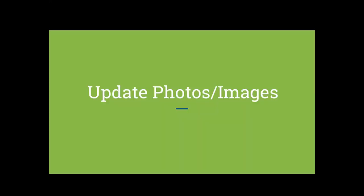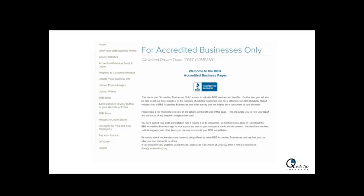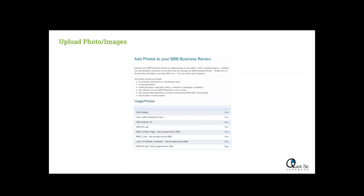We're going to start today by talking about uploading photos and images. To do that you'll start by going to the main page of the business login. You will know you're at the correct place because it will say the name of your business, and for accredited businesses only, once you're at this page you can select Upload Photos and Videos. When you click on that button you'll be brought to this page for adding photos to your business review.